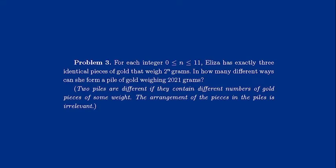Problem 3. For each integer n in the range 0 up to 11 inclusive, Eliza has exactly three identical pieces of gold that weigh 2 to the power n grams. In how many different ways can she form a pile of gold weighing 2,021 grams?